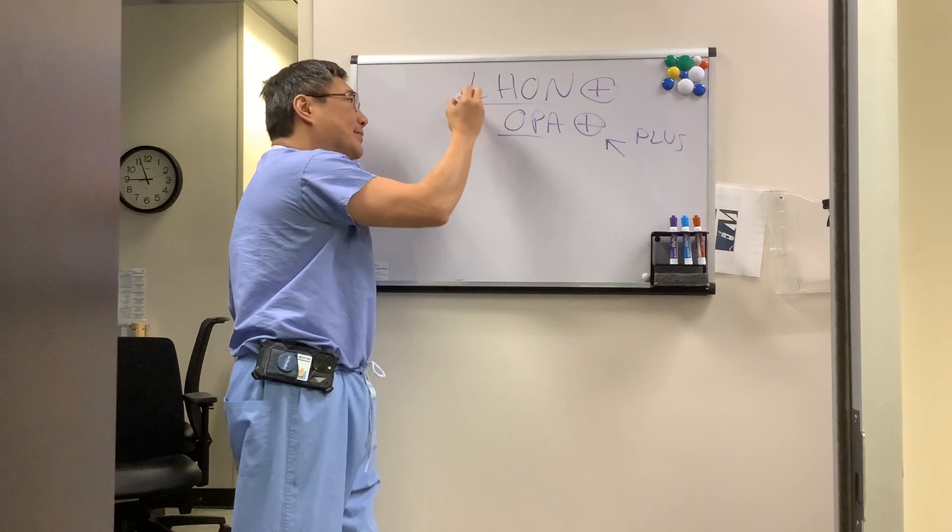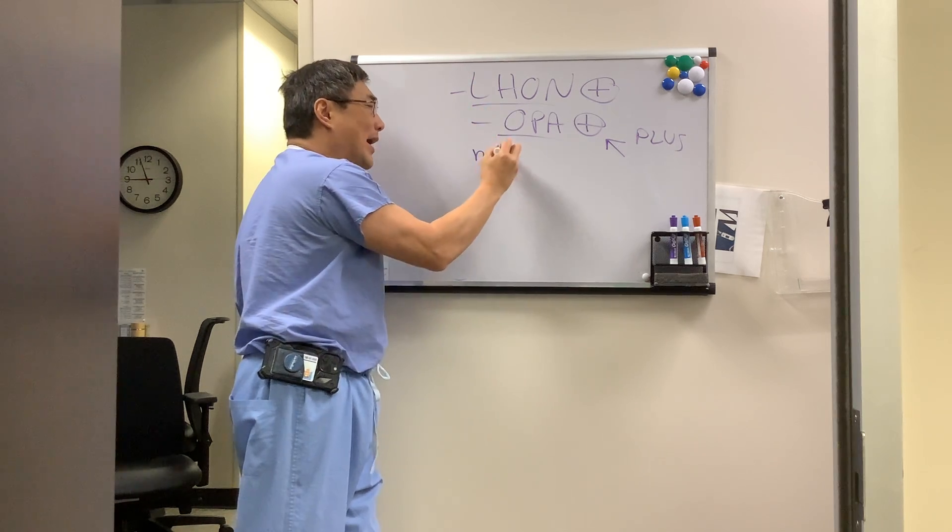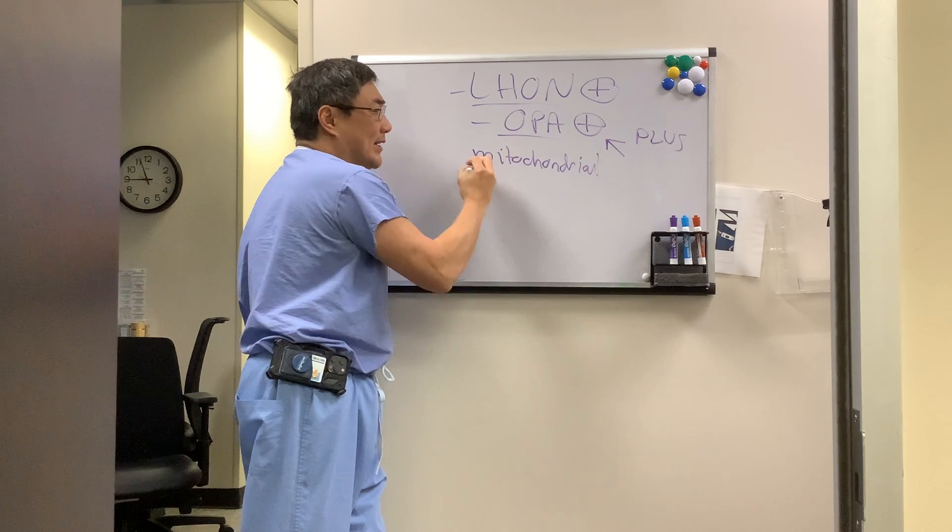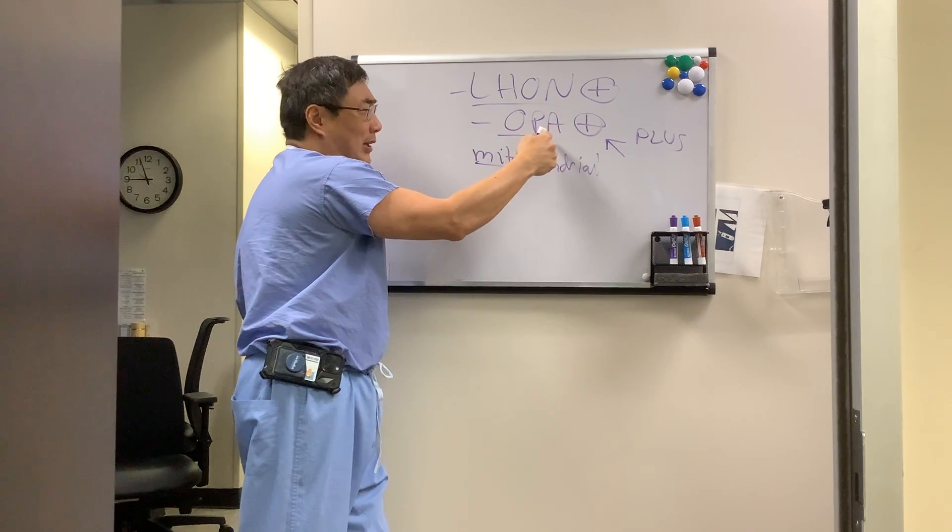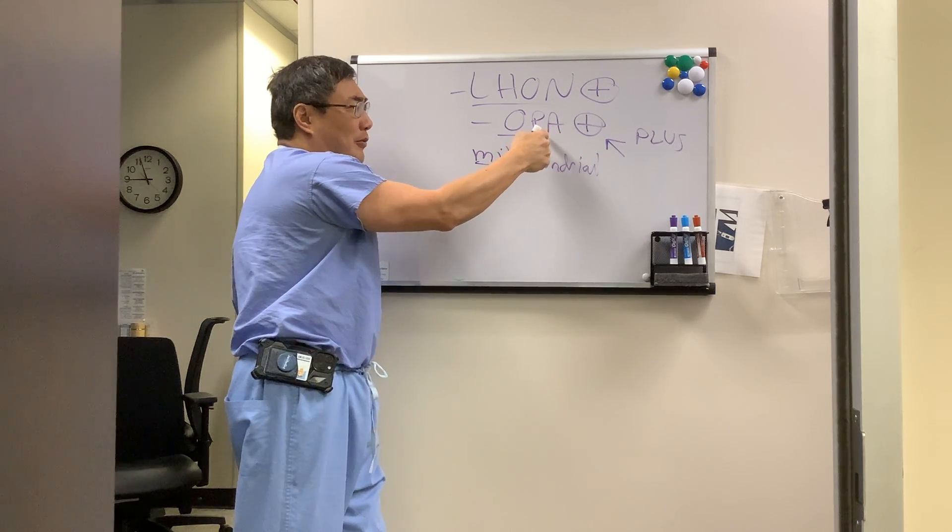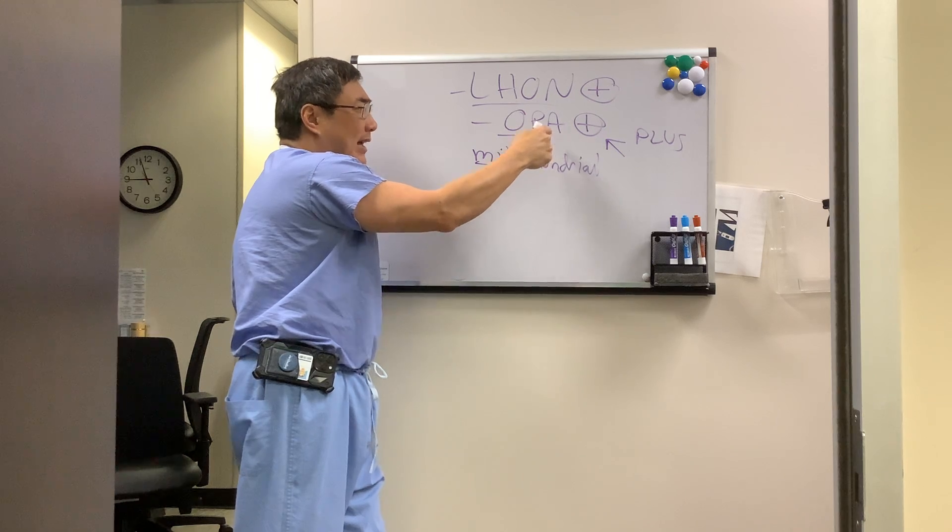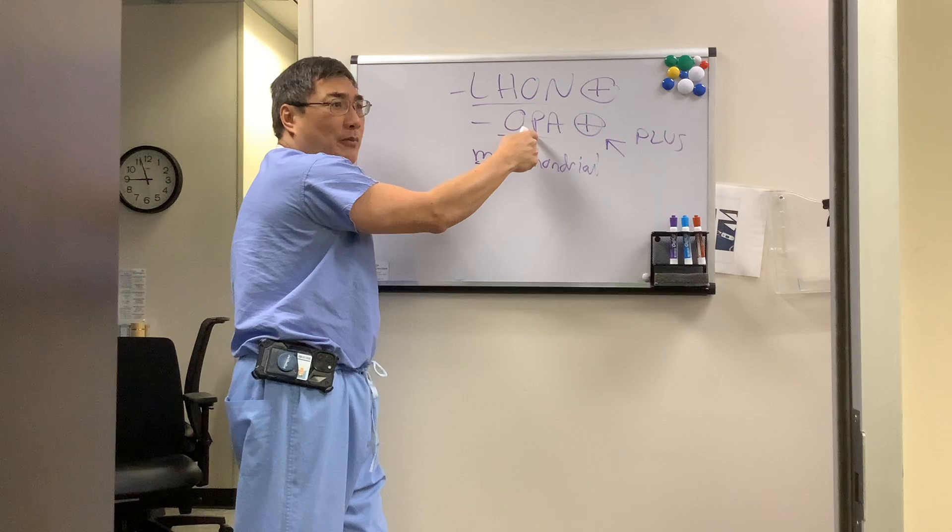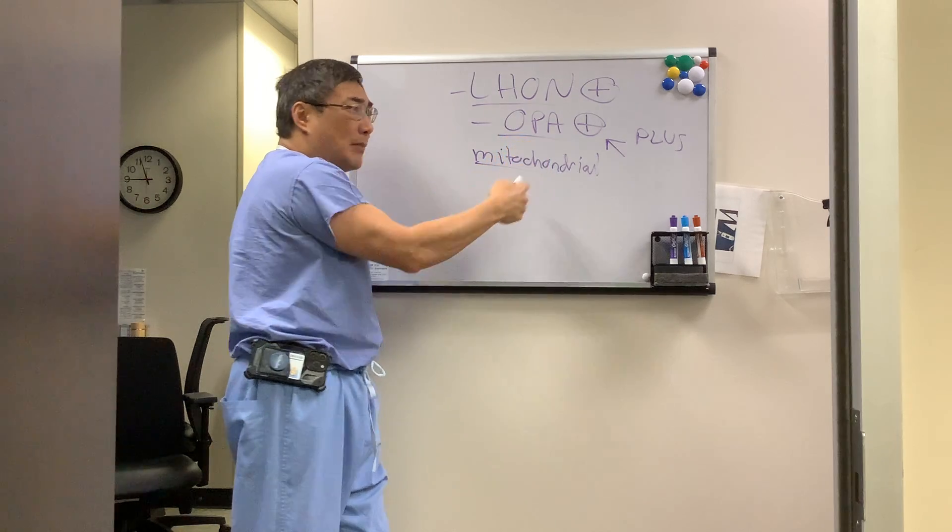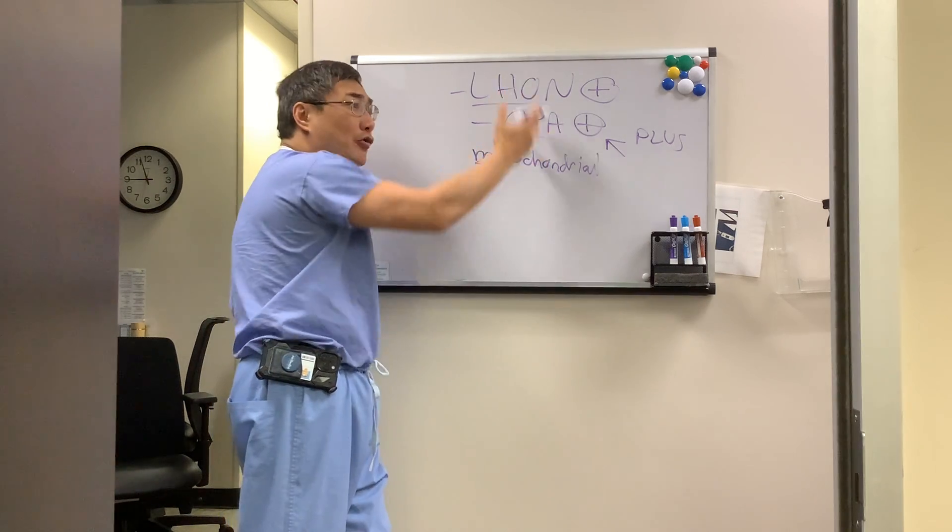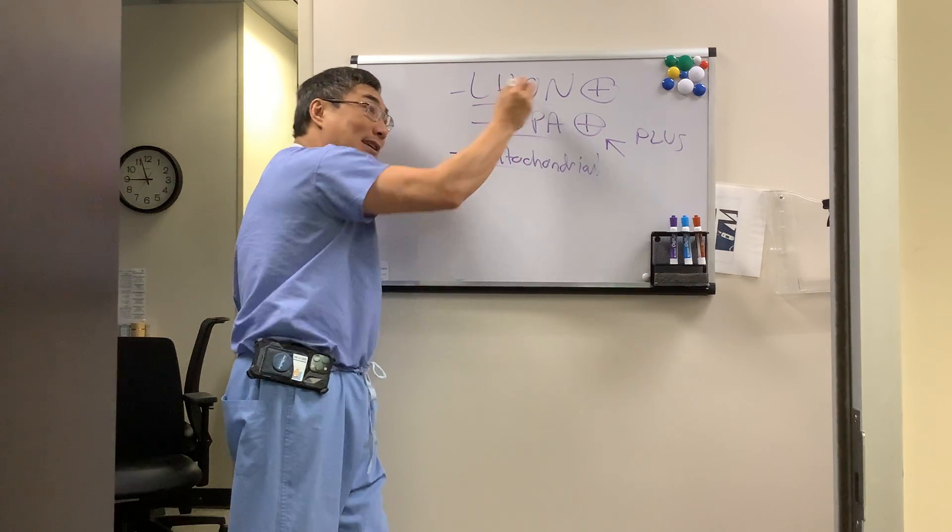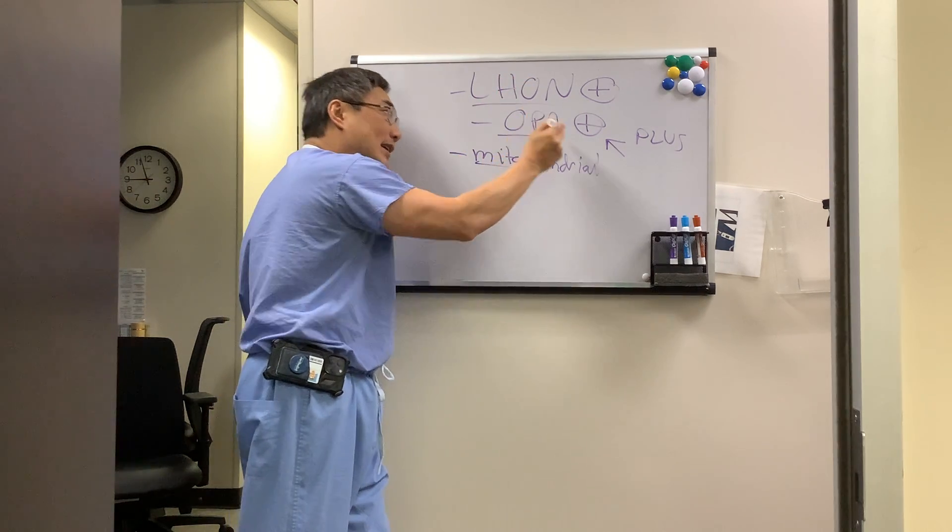The plus means that these are basically mitochondrial disorders. Even though OPA1 is an autosomal dominant chromosome 3 abnormality, it manifests like a mitochondrial disease because the protein product of OPA1 is a mitochondrial fusion protein. So they both act like mitochondrial optic neuropathies, even though Leber is mitochondrial and this isn't.